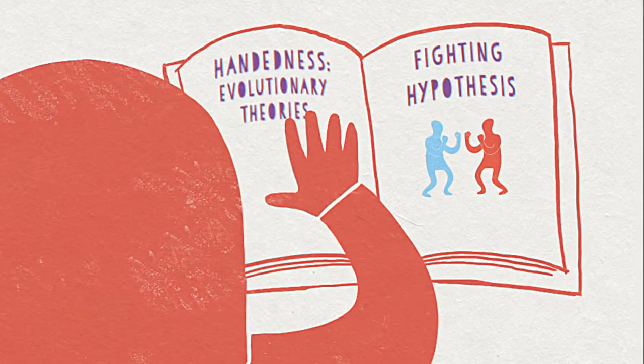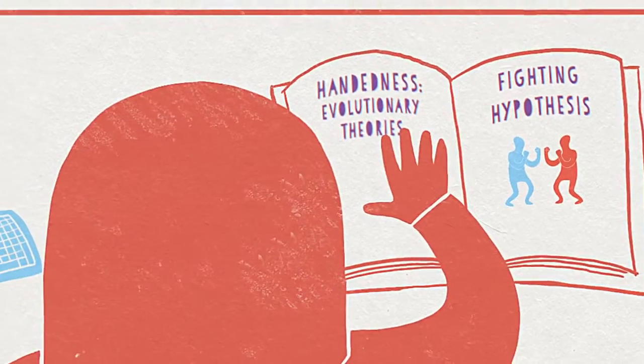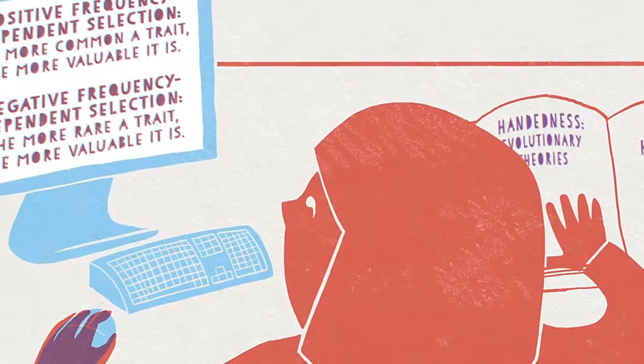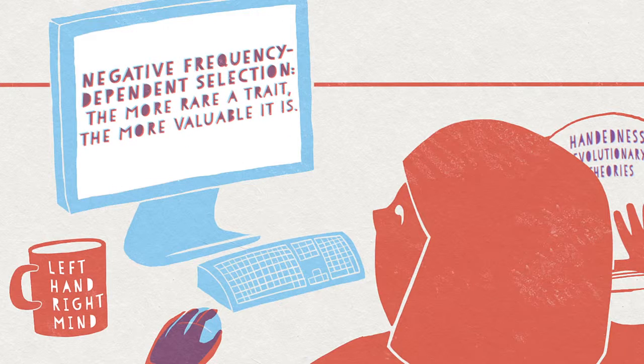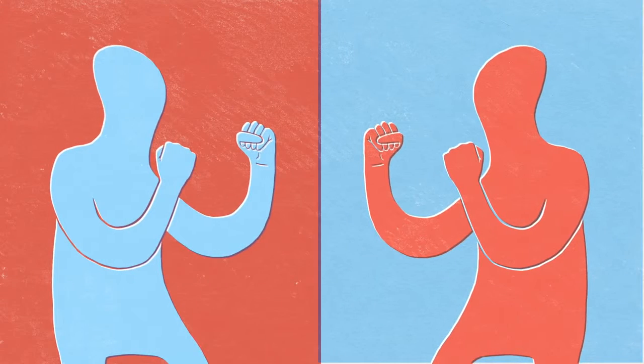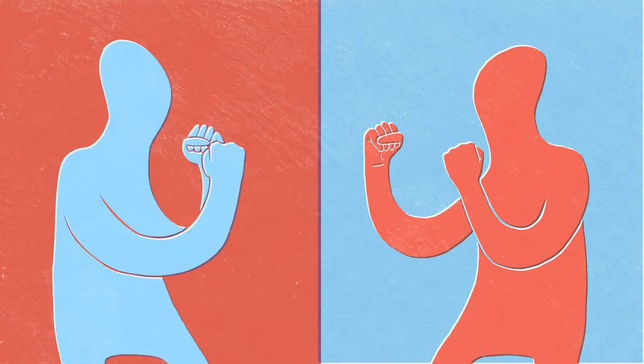This fighting hypothesis, where an imbalance in the population results in an advantage for left-handed fighters or athletes, is an example of negative frequency-dependent selection. But according to the principles of evolution, groups that have a relative advantage tend to grow until that advantage disappears.